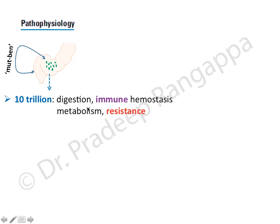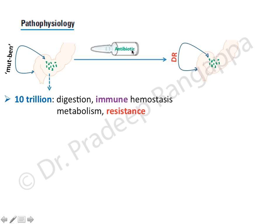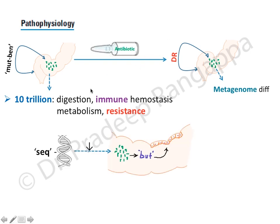When we give systemic antibiotics, the symbiotic mutually beneficial interaction between microbiota and the gut gets disrupted, leading to genetic changes - what they call metagenome differences. This affects mucosal integrity, increases gut translocation, and increases risk of other infections. Studies analyzing DNA from feces in patients receiving amoxicillin-clavulanic acid showed significant reduction in gut microbiota after antibiotic administration.